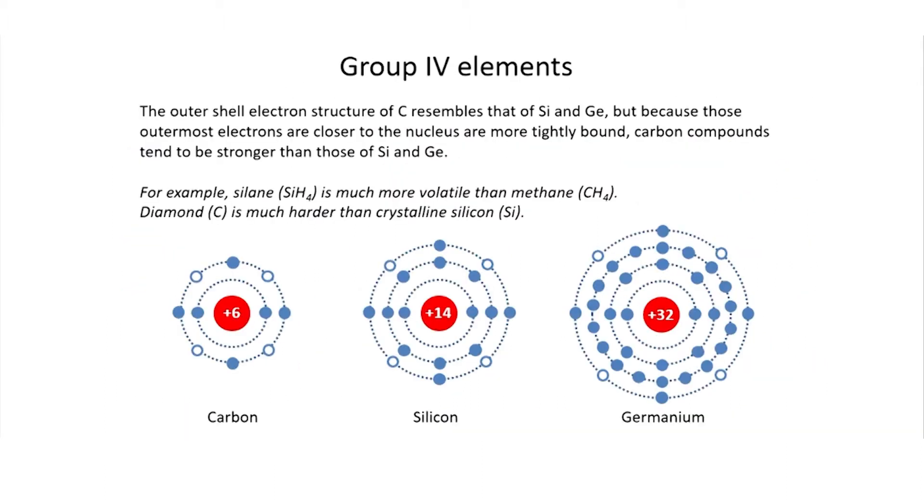Here's the electronic structure. Carbon, silicon, and germanium are all group four elements on the periodic table. They're group four elements because if you look at the outermost shell, there are four electrons.